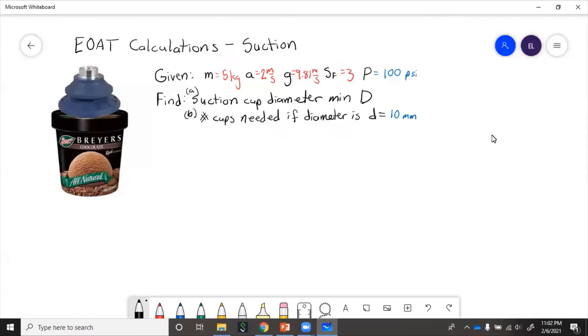In this example, we're going to calculate what size or how many suction cups you need to lift an object. So if we're given mass of the object, lift acceleration, acceleration due to gravity, safety factor, and air pressure...